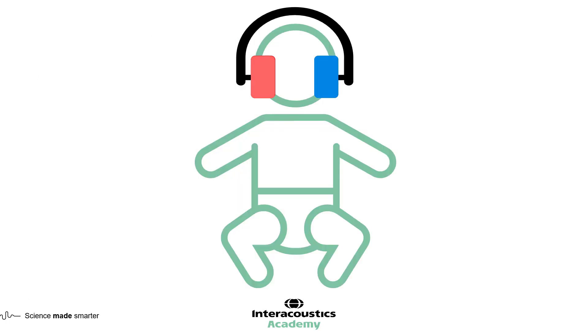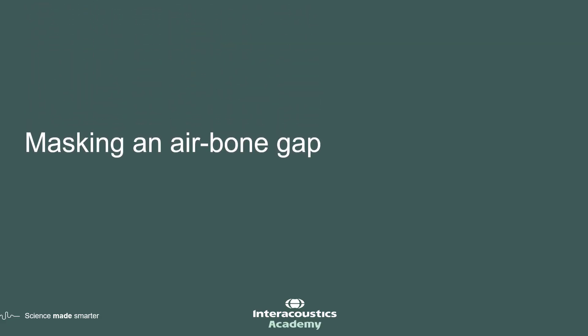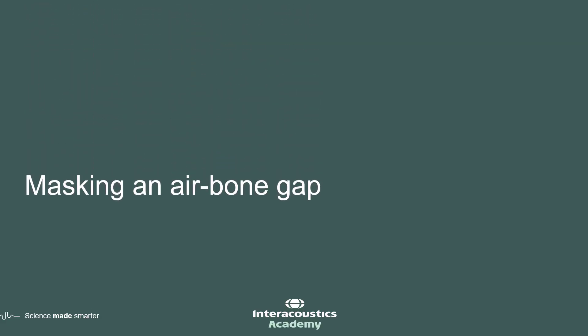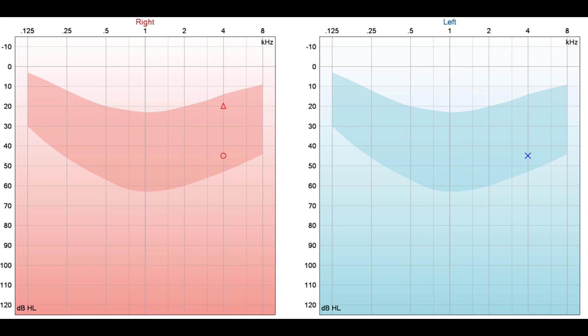If and when you have information about the air conduction levels for both ears, you can perform masked bone conduction testing. It is still advisable to perform not masked bone conduction first, as this may eliminate the need for masking, which can risk unsettling the baby as you introduce an additional transducer and stimulus. If air conduction levels have been obtained for both ears, and you are ready to perform masked bone conduction, now is the time to enter these values into the masking calculator.